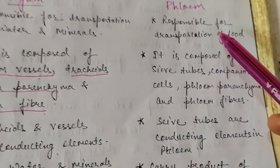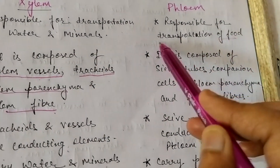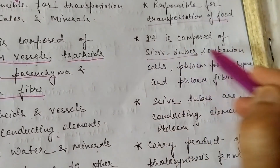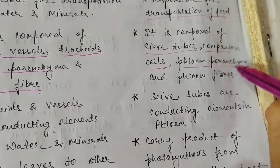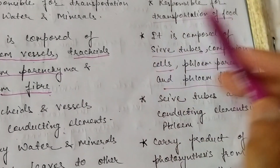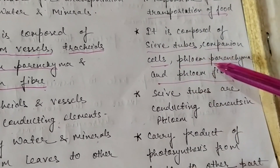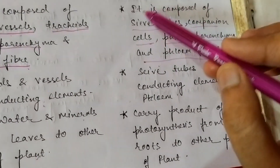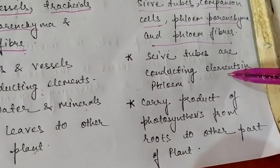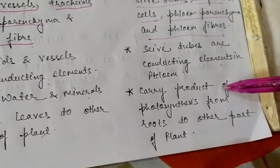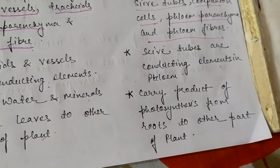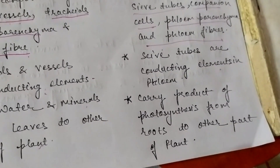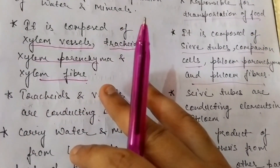Now talking about phloem — phloem is responsible for the transportation of food. It is composed of sieve tubes, companion cells, phloem parenchyma, and phloem fibers — these are its four components. Out of these, sieve tubes are the conducting elements in phloem. Sieve tubes carry the products of photosynthesis from the leaves to other parts of the plant. This is the role of xylem and phloem.